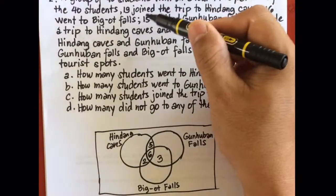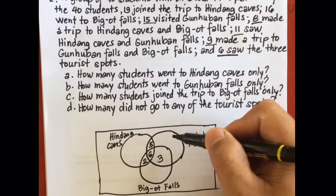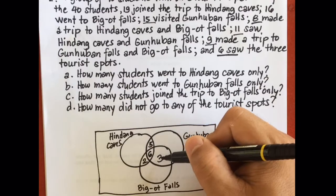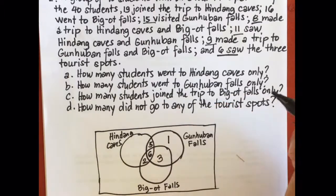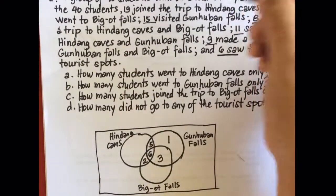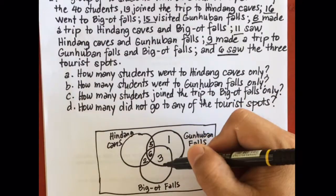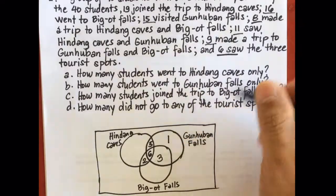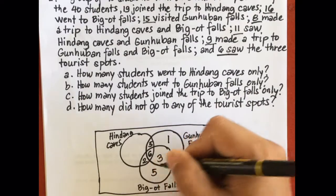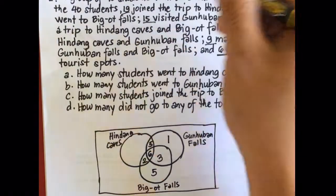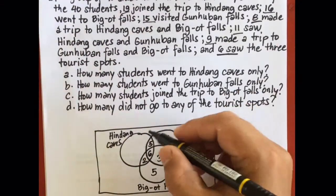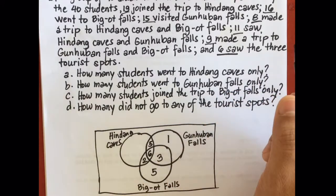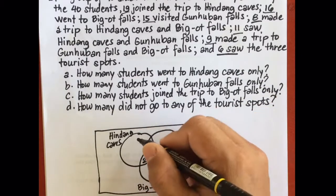15 visited Gunhuban Falls total. The values already placed in Gunhuban Falls are 5 plus 6 plus 3, which equals 14. So 15 minus 14 is 1. Then 16 went to Bigot Falls: 2 plus 6 plus 3 is 11, so 16 minus 11 is 5. Then 19 joined Hindang Caves: 5 plus 6 plus 2 is 13, so 19 minus 13 equals 6.